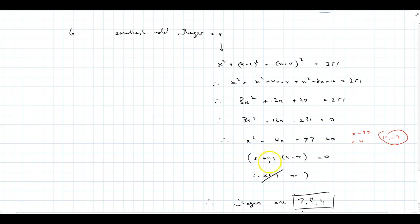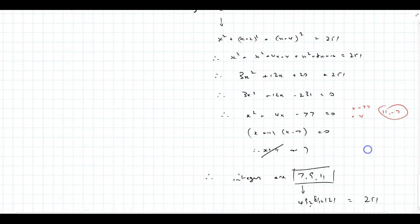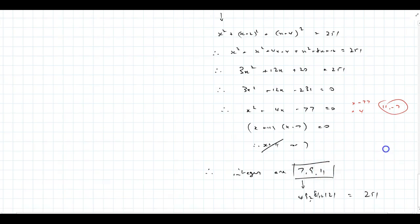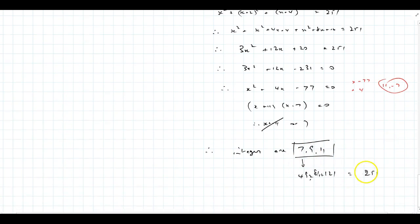Factorises to x plus 11, x minus 7. We can ignore the minus 11, because we know that x is positive. So x must be 7, which means my three integers are 7, 9, and 11. And if you look at the squares of each of those to check, you get 251. My little check there was to square each of them. 49, 81, that's 121. That's equal to 251. So that checks out.